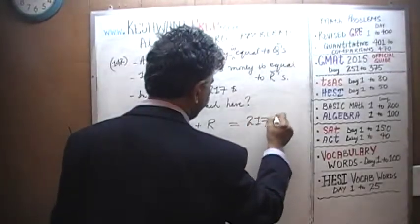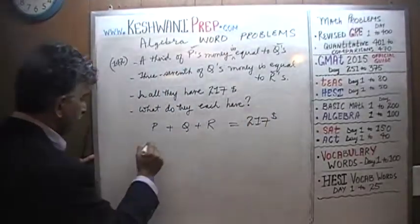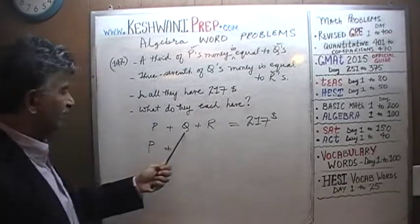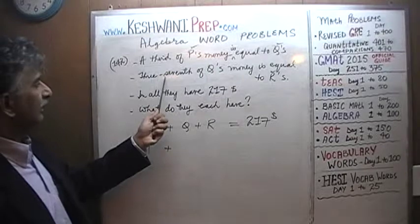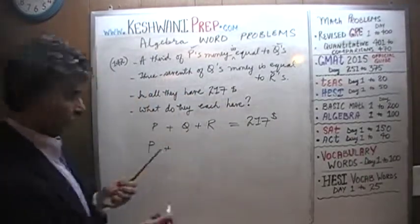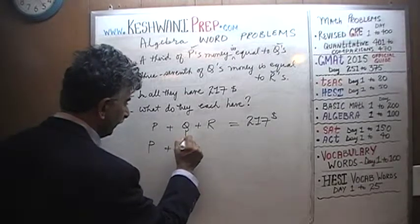We have three people P, Q, and R, and altogether they have $217. Mr. P has P dollars. Mr. Q has Q dollars, but we are told that a third of P is equal to Q. Q equals a third of P.